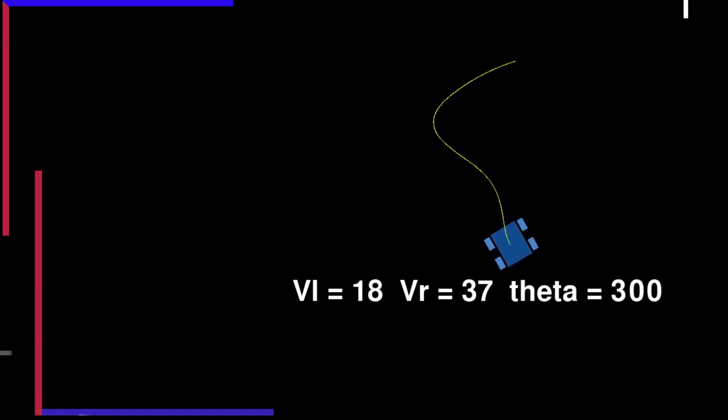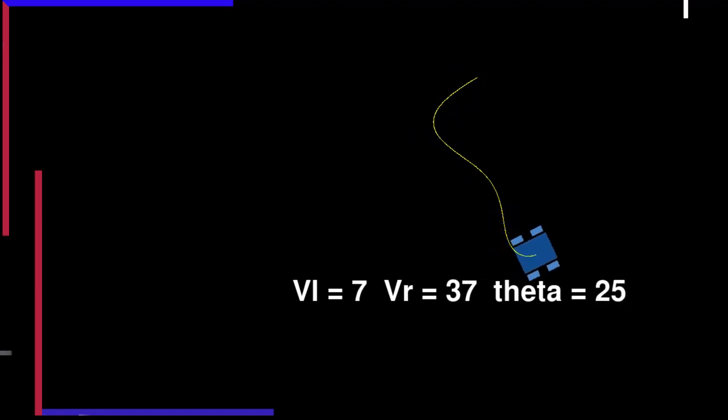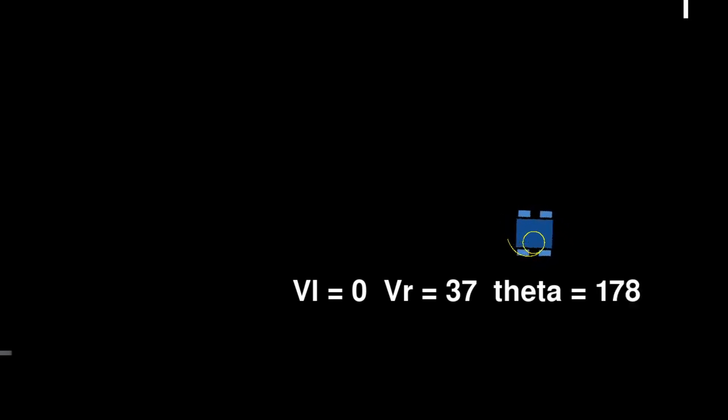This will cause some confusion with the orientations and the translations compared to the real world project. We will see how to fix this when we implement our code. Also, the speed in the real world is expressed in meters per second in the international system of units, but since we are working with images